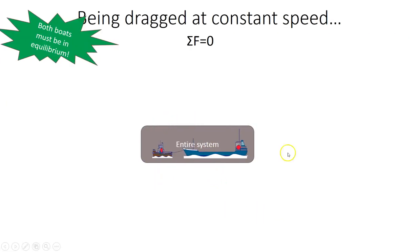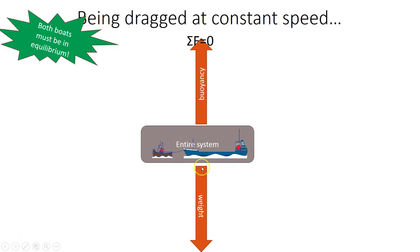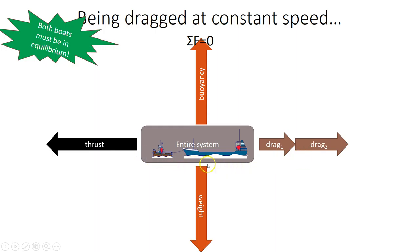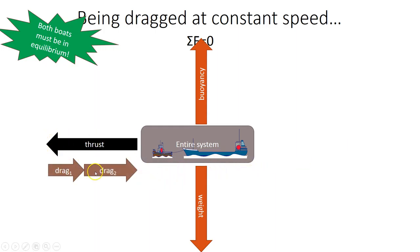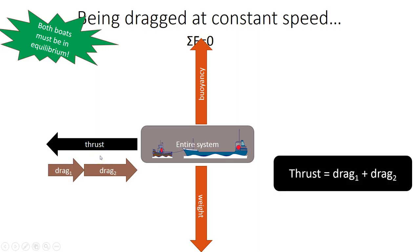You can also think about the forces on the entire system — the two boats combined. For that case, we don't need to consider any of the tensions in the cable, any more than when you're considering the forces acting on a car you need to consider the forces acting between molecules in the car. So only the outside forces need to be considered. We've got the weight and the buoyancy, which are equal and opposite, and the thrust, which therefore is equal to the drag on both of the boats. So thrust equals drag one plus drag two.